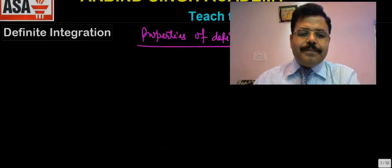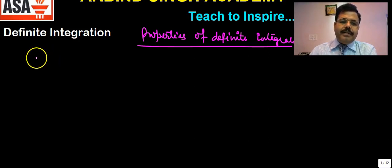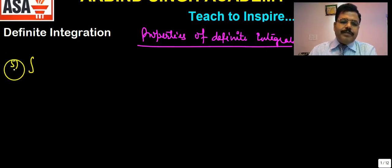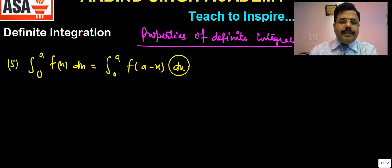Hello, welcome to Ervin Singh Academy. This is the third lecture on definite integrals. I hope you have already watched parts one and two. In the last session we discussed the first five properties of the definite integral. Just to connect, the fifth property was that the integral from 0 to a of f(x) dx equals the integral from 0 to a of f(a-x) dx.